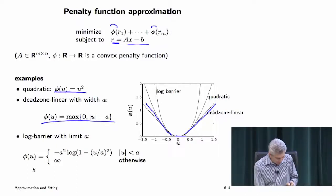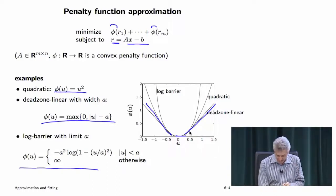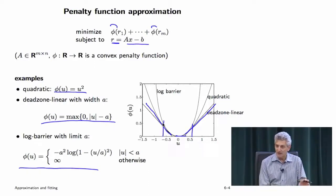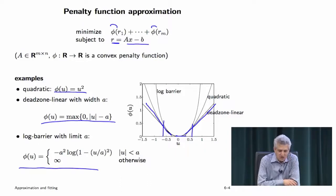Here's log barrier with a limit a. It matches the quadratic almost perfectly over a pretty big range, but then it accelerates and goes up to plus infinity. What that means is: I do not even want to discuss the possibility of a residual more than plus or minus one — I won't allow it. But for smaller residuals, it's just like least squares.